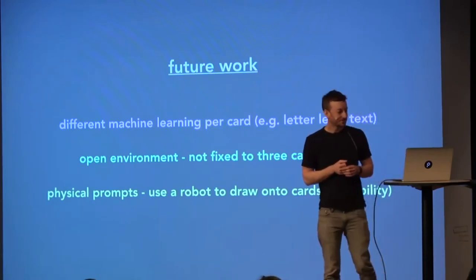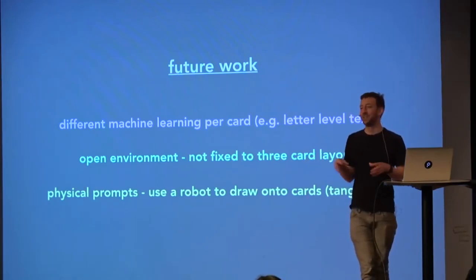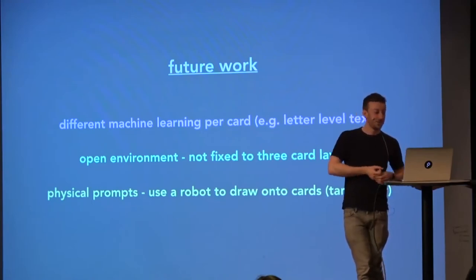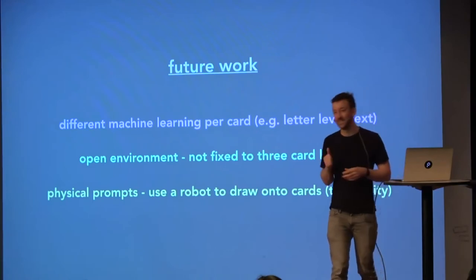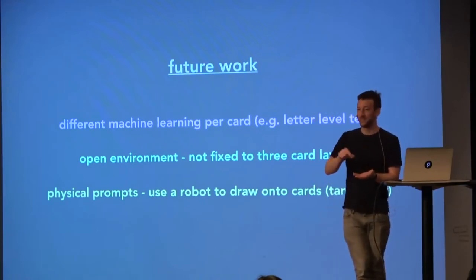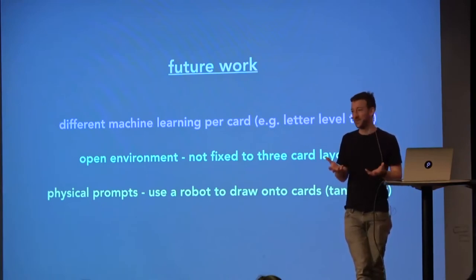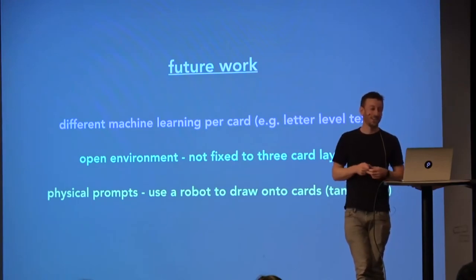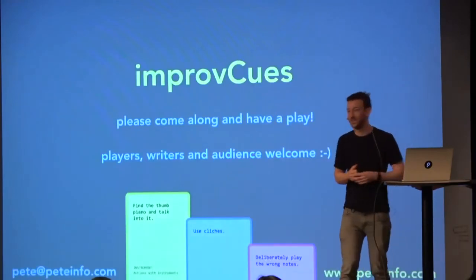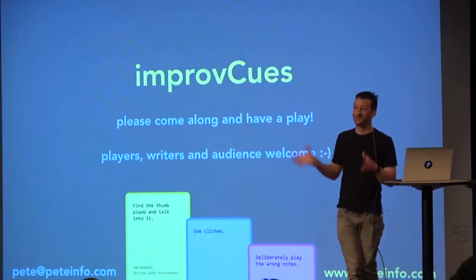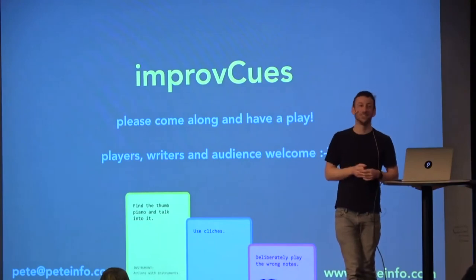Future work I'd like to go on to: having different machine learning per deck of cards — the oblique ones could go down to letter-level text generation, getting really weird really quickly. An open environment — at the moment it's fixed with three cards to play and one to add, so it would be great to open that up. And one I'd be really interested in: I have a colleague in the computer science department who's built a robot that writes with pencil in a very human-like way, full of errors. I'd love to do actual John Zorn Cobra-style cards on colorful paper and remove the screen entirely from the process. The installation only really works through having you involved — if you'd like to come and perform, there's a whole bunch of instruments. Come and gather after lunch.